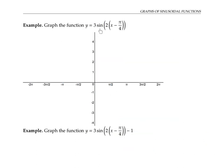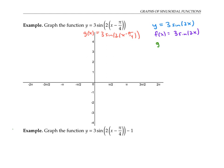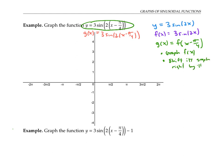Next, let's graph the function y equals three times sine of two times quantity x minus pi over four. This function is very closely related to y equals three sine of two x. If we call that f of x and this new function g of x, then g of x equals f of x minus pi over four. This means we can first graph f of x and then shift its graph to the right by pi over four, because that's what you do when you subtract a number on the inside of a function.